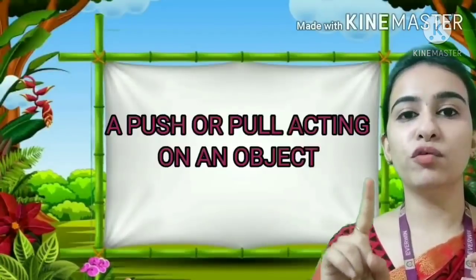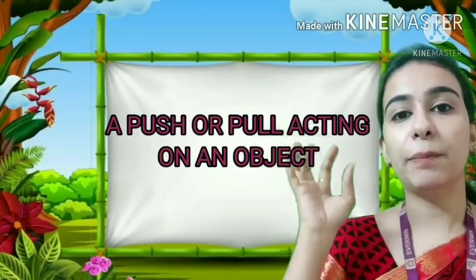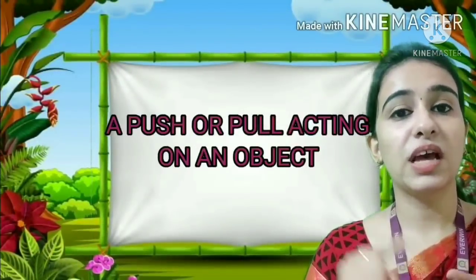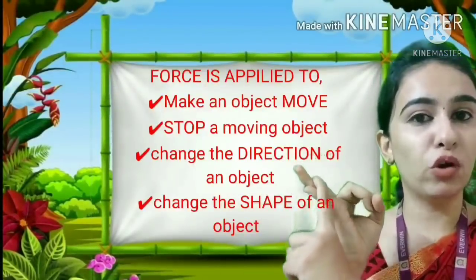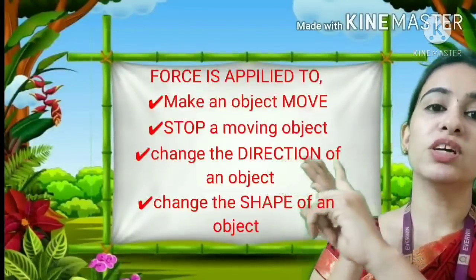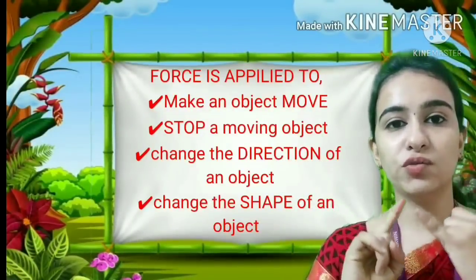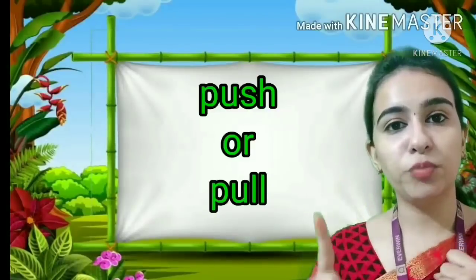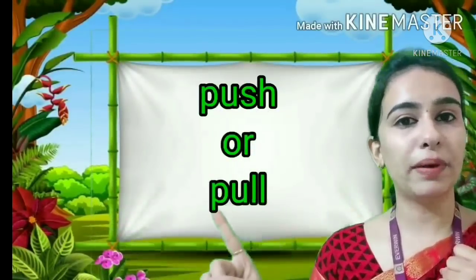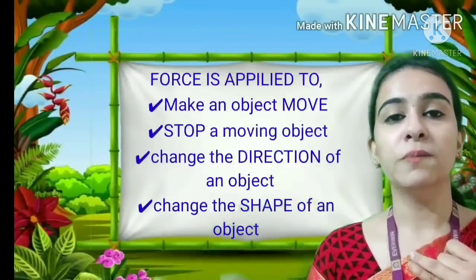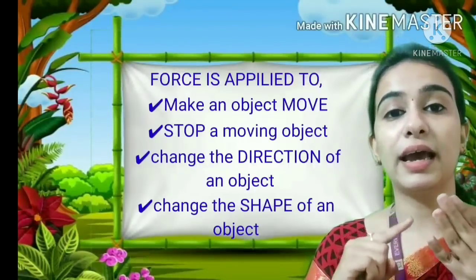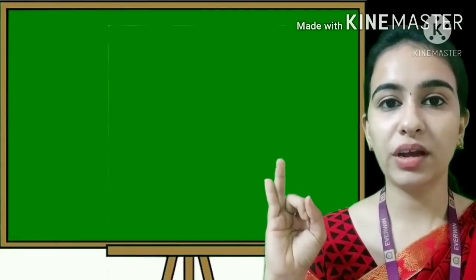Non-living things don't move from one place to another on their own - an object will move only when we apply force on it. Force is a push or a pull. Force is applied for four reasons: to make an object move, to stop the moving object, to change the direction of an object, and to change the shape of an object. We have learned about what force is and why we apply force. Now we are going to learn the types of forces.